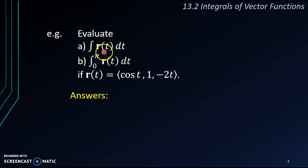When we look for the indefinite integral, we just need to integrate one by one. That means we are going to get sin t, which is the anti-derivative for cos t, t from 1. And if we integrate -2t, we'll get -t². So this is the anti-derivative. And then don't forget to plus a constant vector.